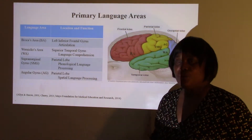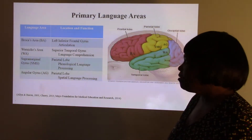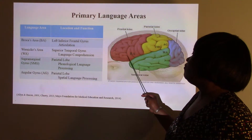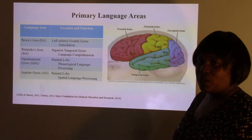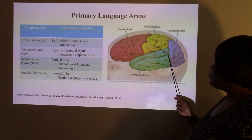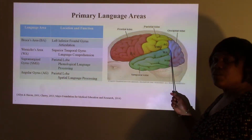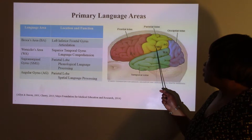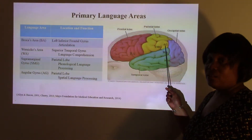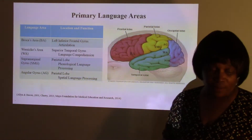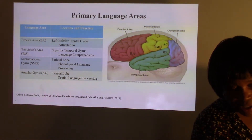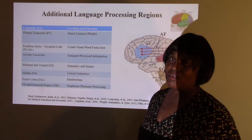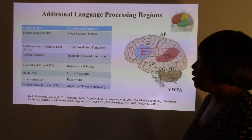I'd like to show you the primary language areas of the brain. We have Broca's area, located in the inferior frontal gyrus, and also Wernicke's area, located in the superior temporal gyrus in the posterior region toward the back. We have the supramarginal gyrus in the parietal lobe and the angular gyrus also located in the parietal lobe. Due to neural imaging studies and research, we found additional areas very important to language acquisition.